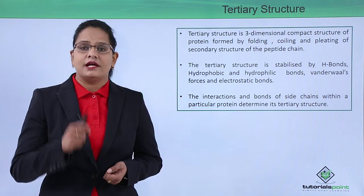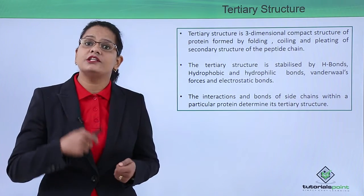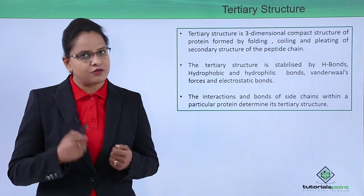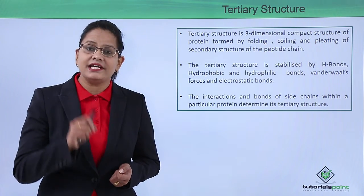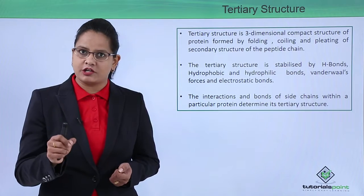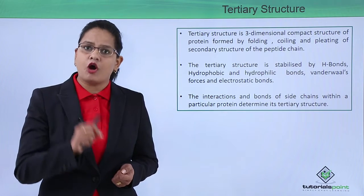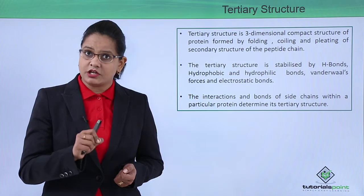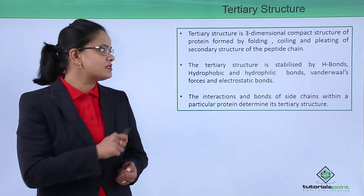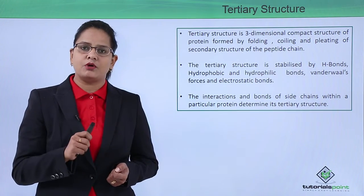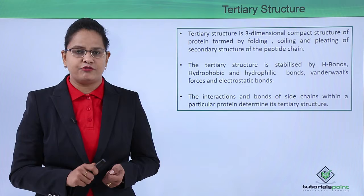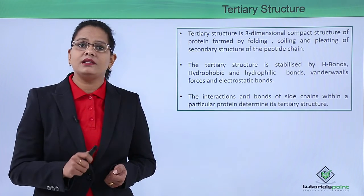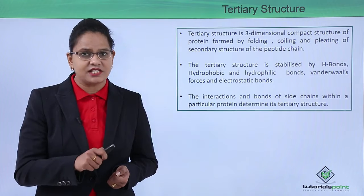A tertiary structure is formed after the secondary structure has further folded and coiled by different types of interactions. It is a three-dimensional folded structure formed out of the peptide chain of the secondary structure. This structure is stabilized by bonds like hydrogen bonds, hydrophobic and hydrophilic bonds.